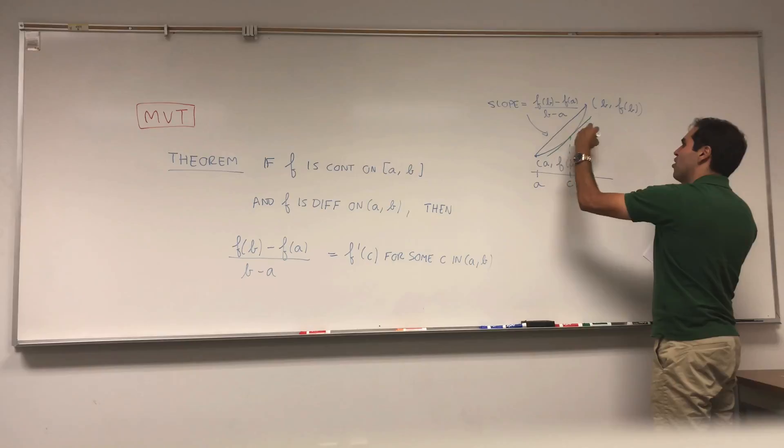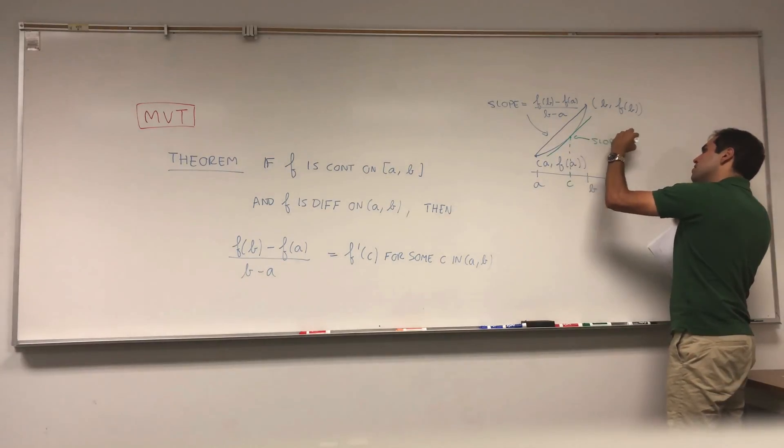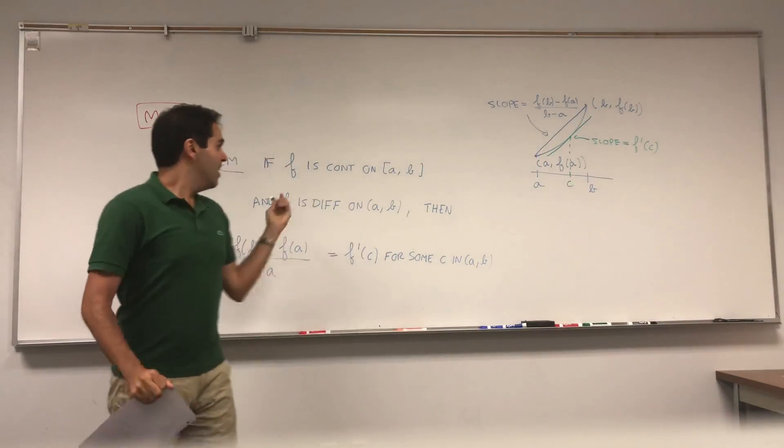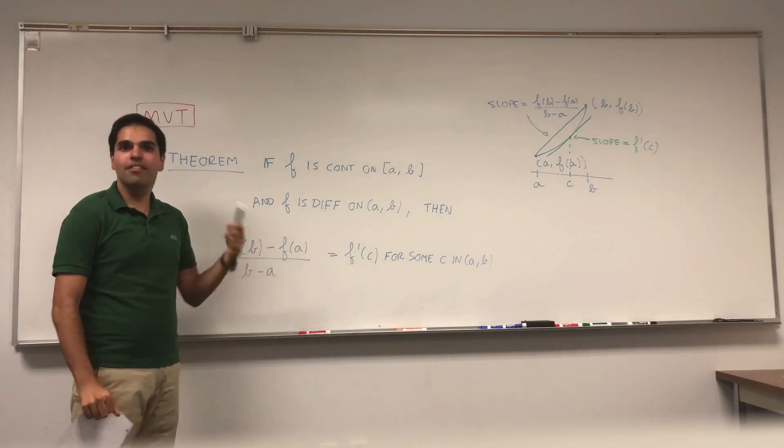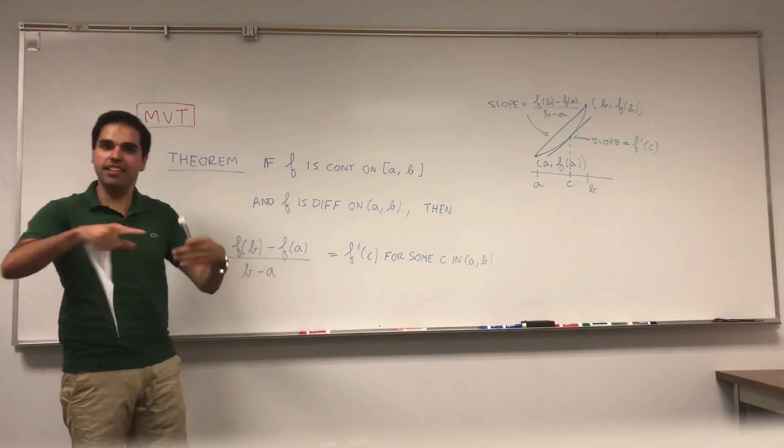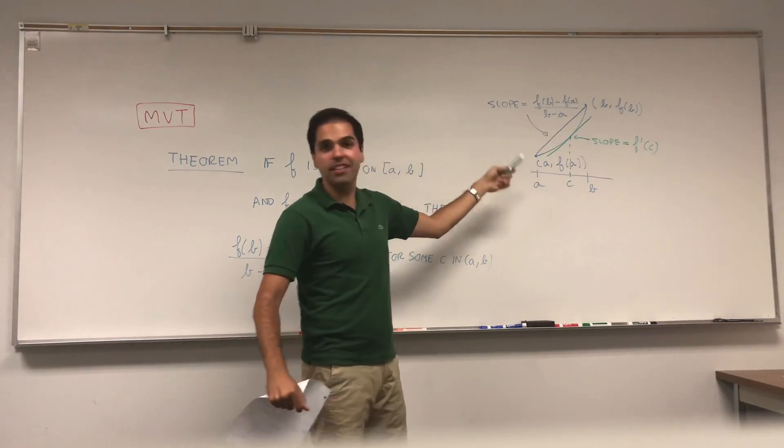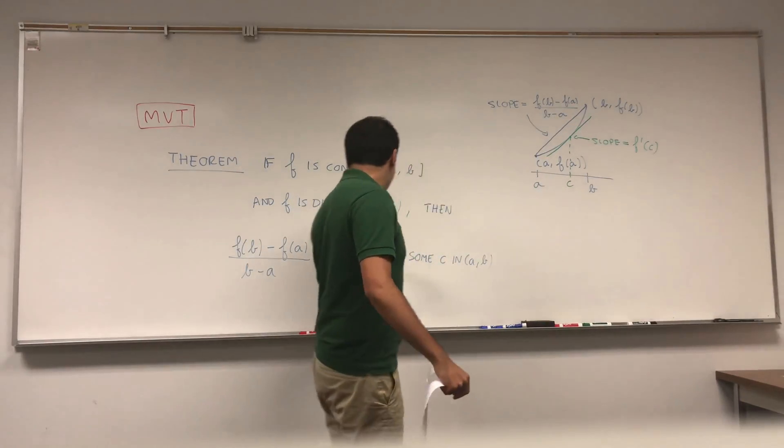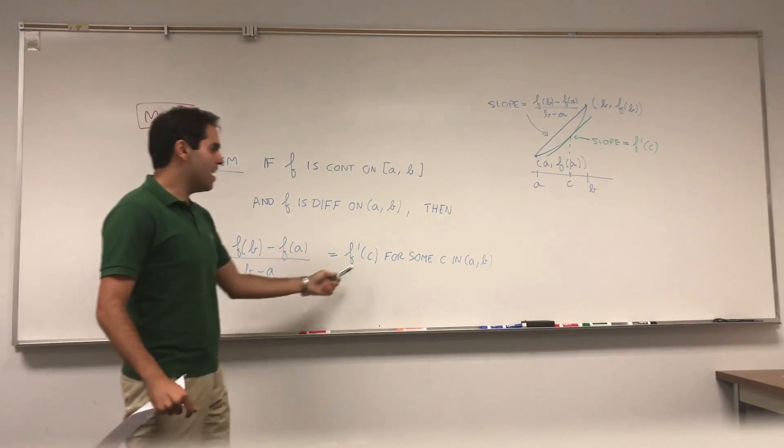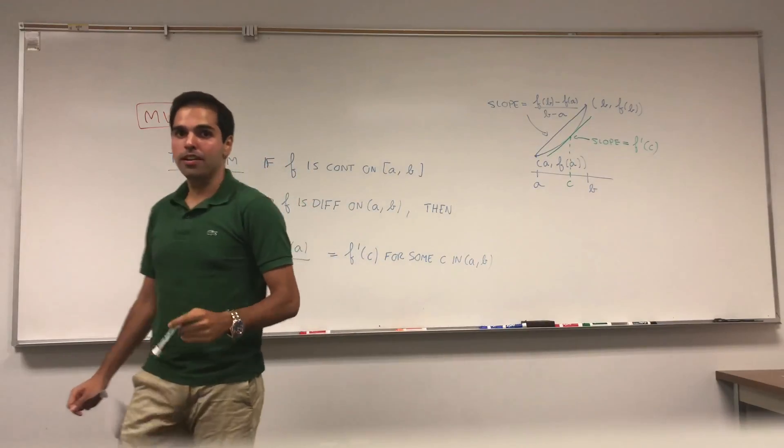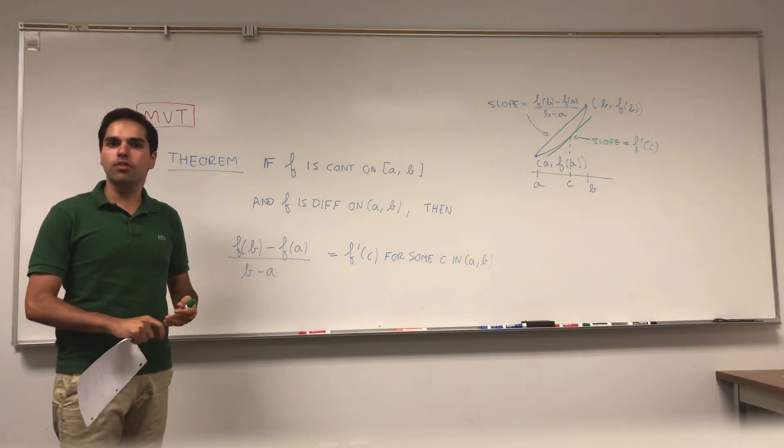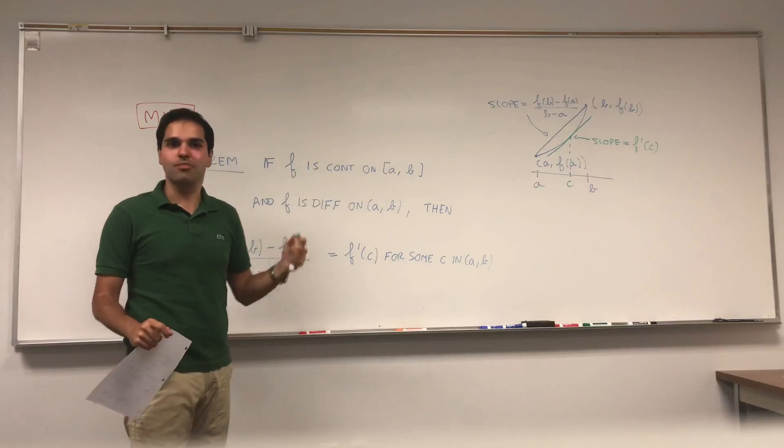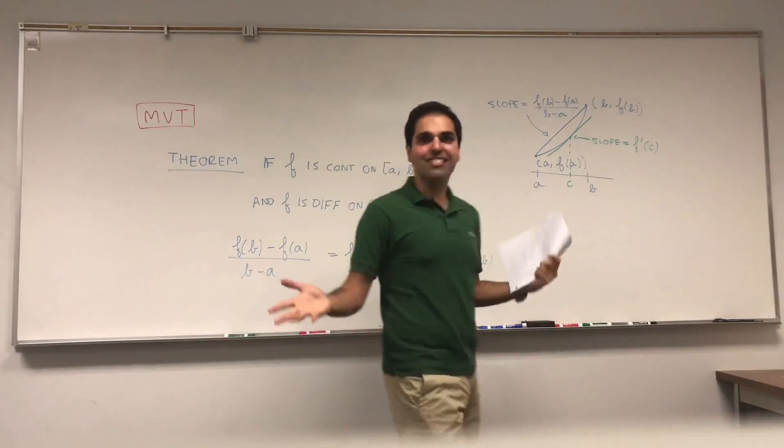In other words, there is some tangent line in between A and B whose slope is exactly that. There is some tangent line which is precisely parallel to that line. So if this is c, then the slope equals f prime of c. Or if you like physics, this quantity can be described as the average velocity. It's how much you're at the end minus how much you had at the beginning divided by the time. And this says this average velocity is actually equal to instantaneous velocity at some point. If your average speed was 60 miles per hour, it turns out at some point you were actually going 60 miles per hour. So it's pretty cool.